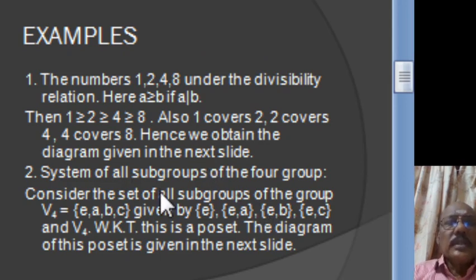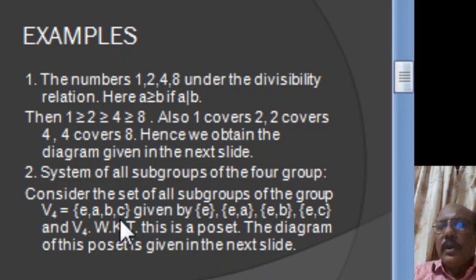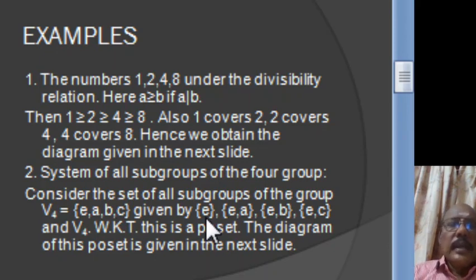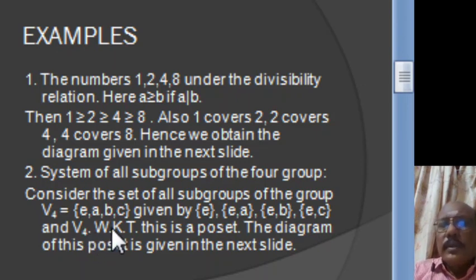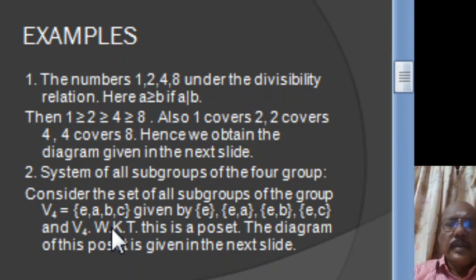Now consider the system of all subgroups of the 4-group V4. The elements of V4 are E, A, B, C. There are 5 subgroups: {E}, {E,A}, {E,B}, {E,C}, and V4. With respect to the usual containment relation, this system is a partially ordered set. The diagram of this set is given in the next slide.